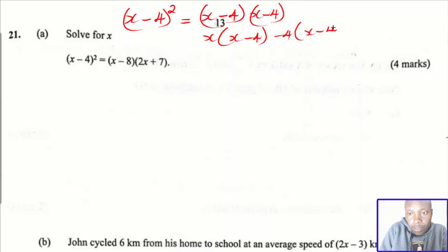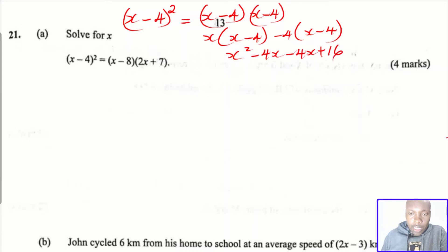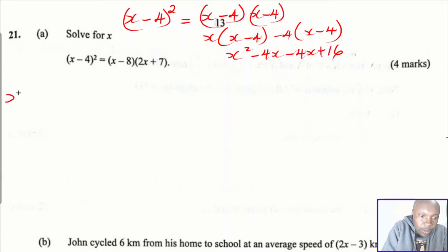When you expand, you get x squared minus 4x minus 4x plus 16. Simplifying, the left hand side is therefore x squared subtract 8x plus 16.